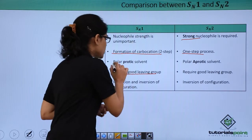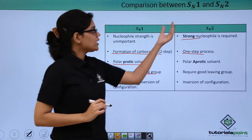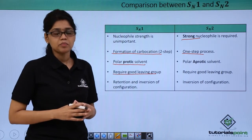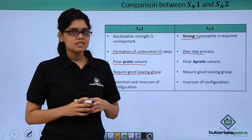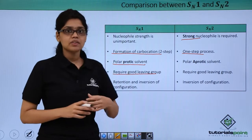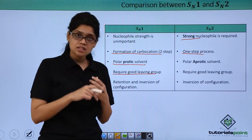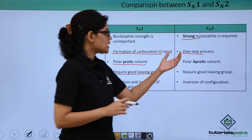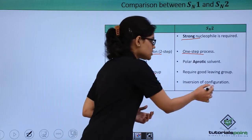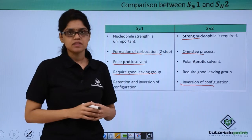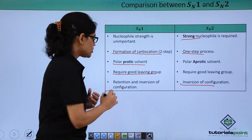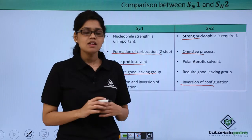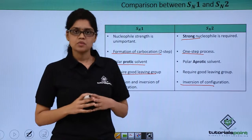In SN1 reaction a polar protic solvent is preferred, while in SN2 reaction a polar aprotic solvent is required. As far as stereochemistry is concerned, in SN1 reaction both retention and inversion of configuration take place, whereas in SN2 reaction only inversion of configuration takes place. We will study retention and inversion of configuration and stereochemistry in detail in our next video.